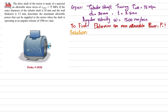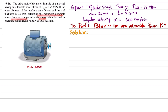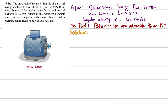Welcome back. Problem 5-36: the drive shaft of a motor is made of a material having allowable shearing stress of 75 MPa. The outer diameter of the tubular shaft is 20 mm and the wall thickness is 2.5 mm. The shaft operates at an angular velocity of 1500 RPM. We need to determine the maximum allowable power that can be supplied to the motor.